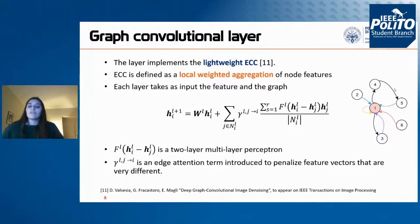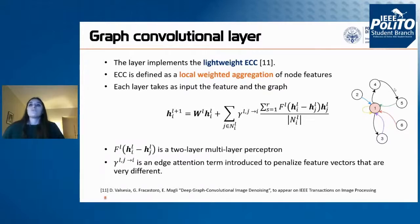This is a particularly flexible and powerful representation because the graph is dynamic. The graph is not fixed a priori according to the three-dimensional positions of the points; it is computed and updated through the network according to the features. Therefore, the graph does not simply connect the spatially closest points but instead reflects similarity between points.